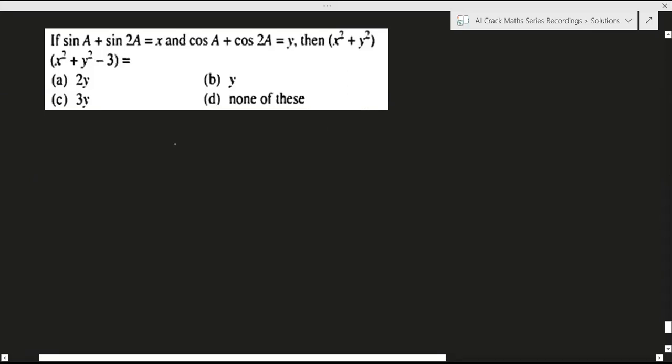Hello everyone, let's discuss QOD 6. If sin a plus sin 2a equals x and cos a plus cos 2a equals y, then x squared plus y squared times x squared plus y squared minus 3 equals...